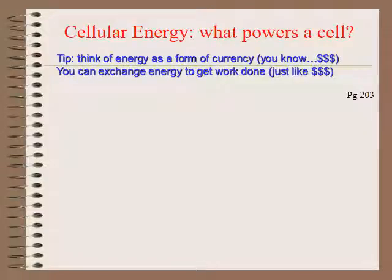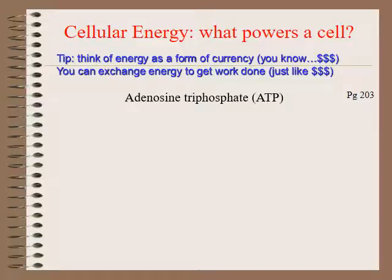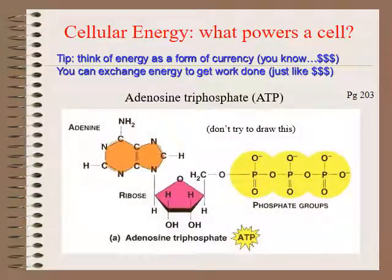Wrapping up, let's get on to cellular energy — what powers a cell. The best way to think of cellular energy is to think of it like a form of currency, like cash. Just like with cash, you can exchange energy inside the cell to get work done. If you want to move a vesicle from point A to point B, you have to spend some energy — some of your cash if you're a cell. So the cash of a cell is this little molecule called adenosine triphosphate, or ATP.